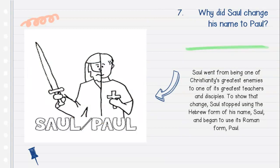Question number seven: Why did Saul change his name to Paul? Saul went from being one of Christianity's greatest enemies to one of its greatest teachers and disciples. To show the change, Saul stopped using the Hebrew form of his name, Saul, and began to use its Roman form, Paul.